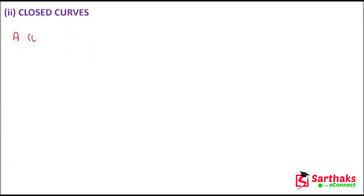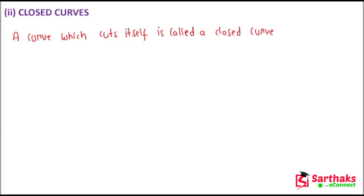The next type of curves are simply closed curves. A curve which cuts itself is called a closed curve — there must be some intersection point of the curve with itself. For example, a figure-eight shape is a closed curve because it cuts itself at one intersection point.